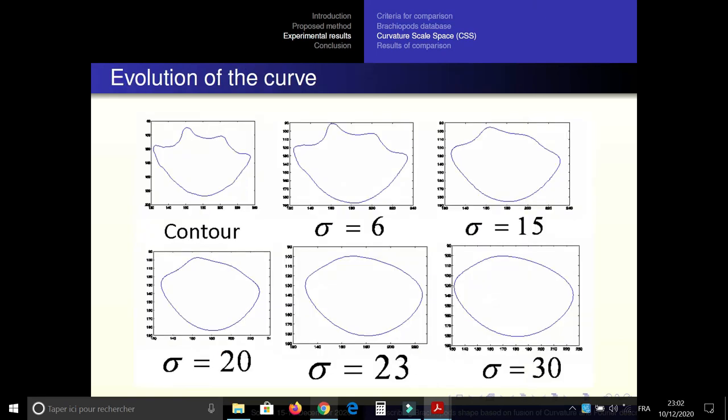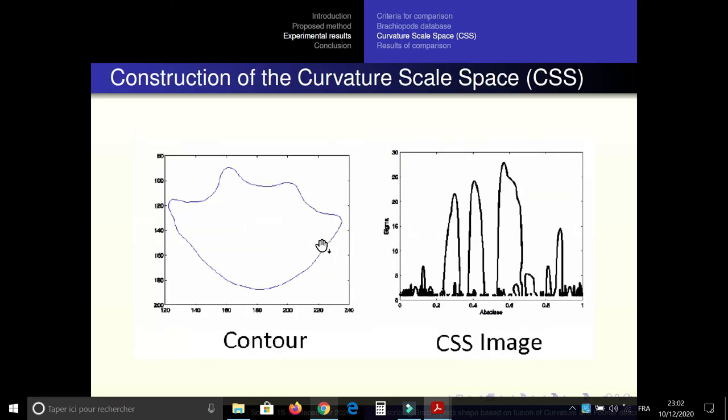Here the evolution of the curve with different values of sigma. This will present the original contour and the CSS image.